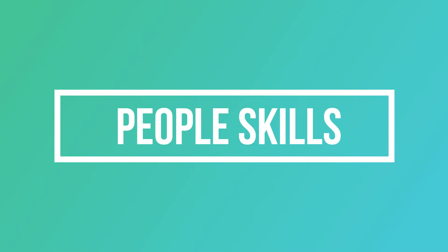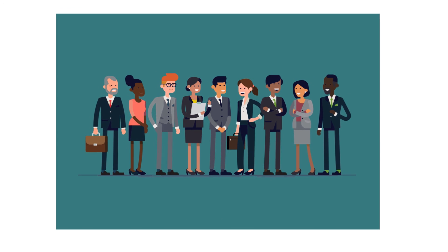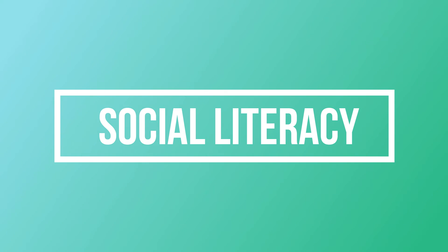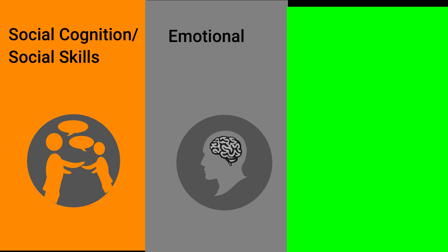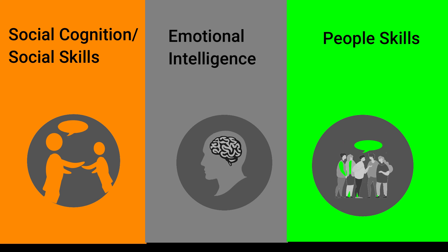Now let us proceed to the last social literacy skill, which is people skills. An accountant needs to be good at math, a web developer needs to learn the newest programming languages, and a doctor needs to keep up on the latest medical research. However, everyone who wants to succeed needs to be fluent in people skills. To wrap it up, social literacy includes social cognition and social skills, emotional intelligence, and people skills. These skills are very important in our daily lives in order for us to create relationships, build, and maintain harmony, and to avoid conflicts in our daily lives.